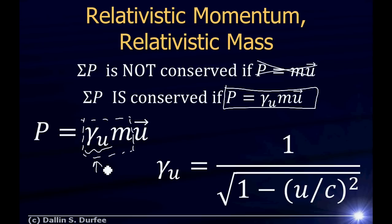To be precise in language: scientists call m the rest mass, and gamma_u times m the relativistic mass. The rest mass does not change when you move faster; the relativistic mass does. But in my view, the relativistic mass isn't really your mass — it's just what you need when you calculate momentum in another frame. Now I'll get off my soapbox and let you come up with your own interpretation of relativistic momentum.